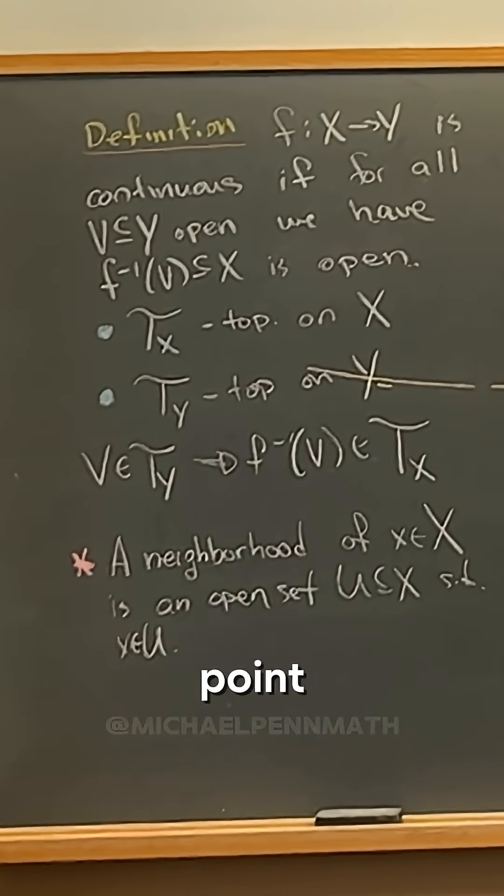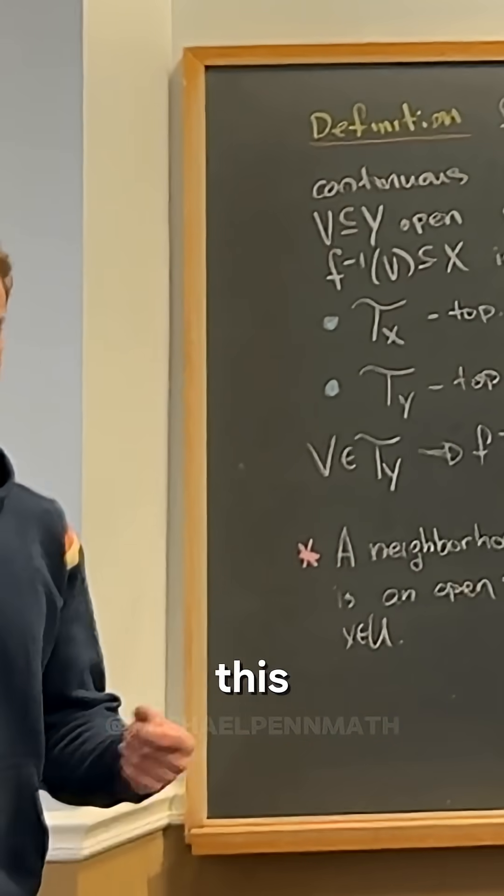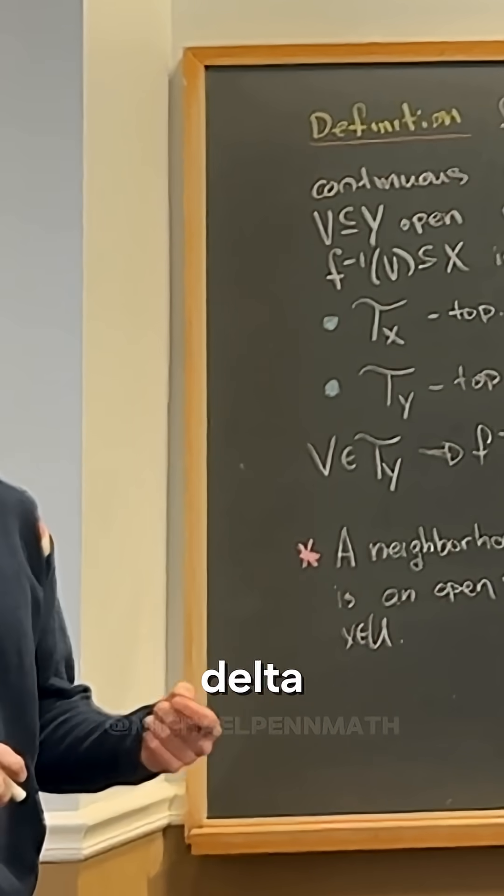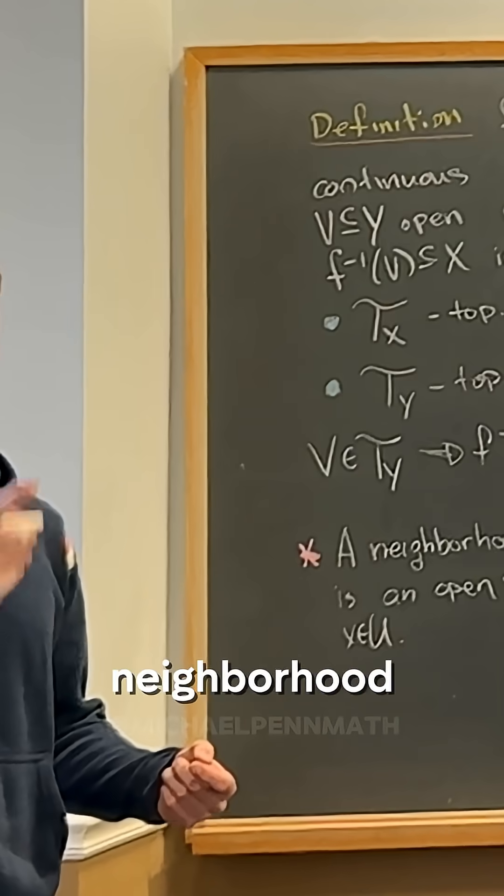That's all. Now in the real numbers there's this notion of a delta neighborhood which would be x minus delta to x plus delta, or in R² there's like a delta neighborhood which is like a little disk, an open disk around a point.